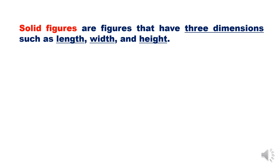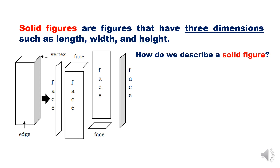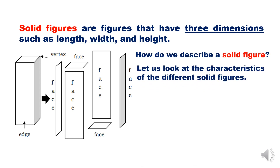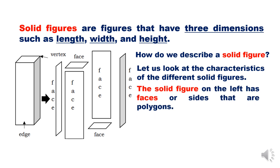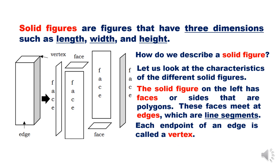Solid figures are figures that have three dimensions: length, width, and height. The solid figure on the left has faces or sides that are polygons. These faces meet at edges, which are line segments. Each endpoint of an edge is called a vertex.